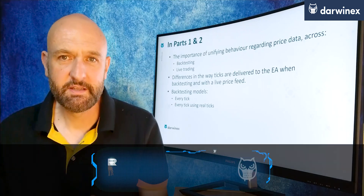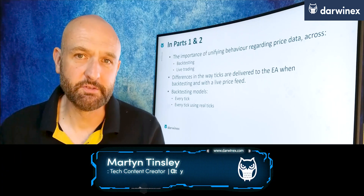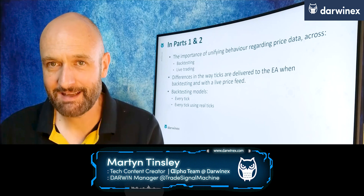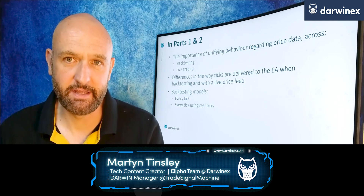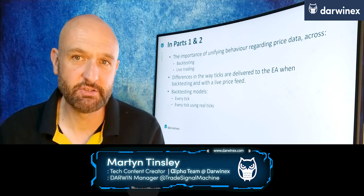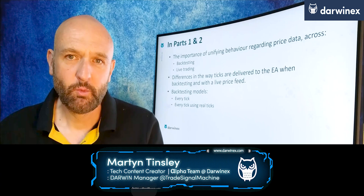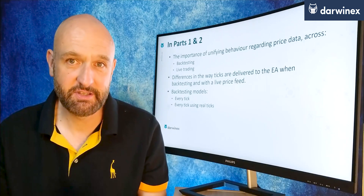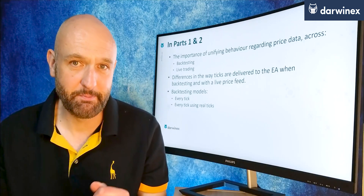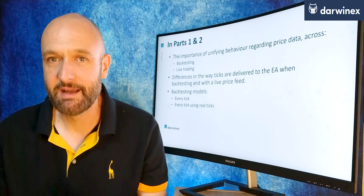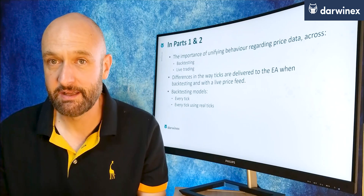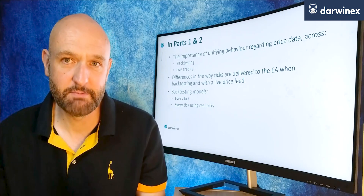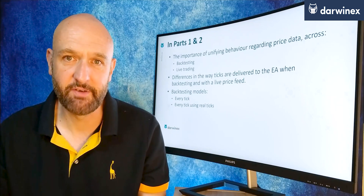In the previous two parts we considered the importance of unifying behavior across backtesting and live trading in relation to the use of price data. We looked at the differences between how data is delivered to the EA by the backtesting engine compared to live trading, and then we turned our attention to the two tick models available in MT5.